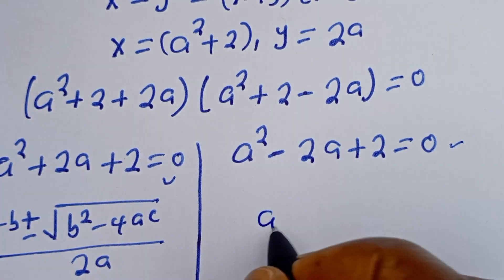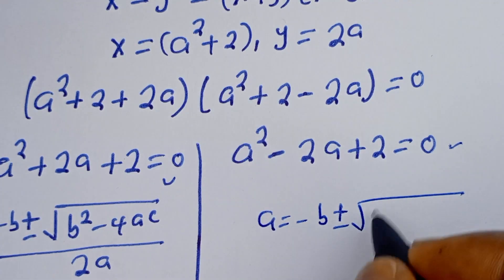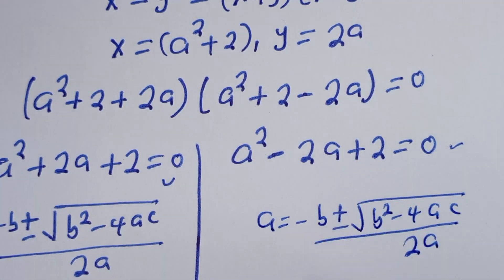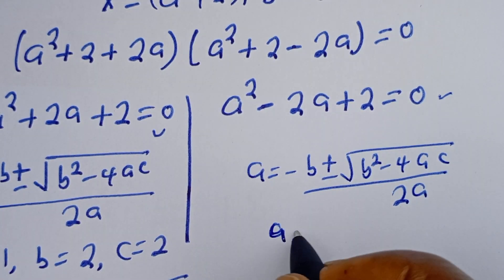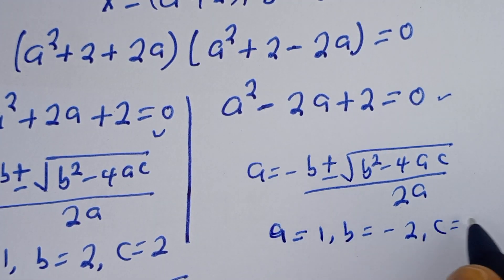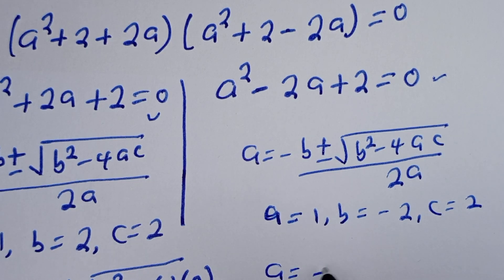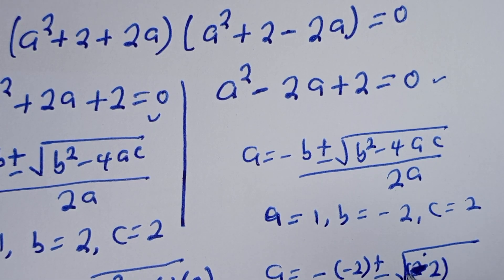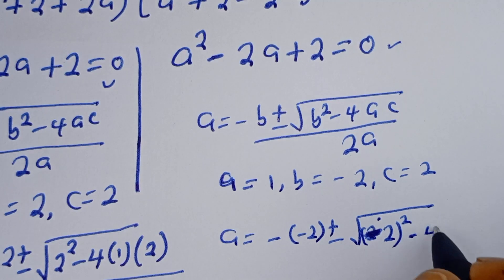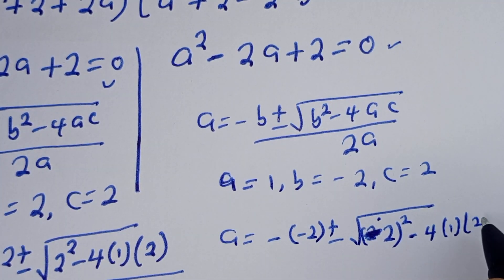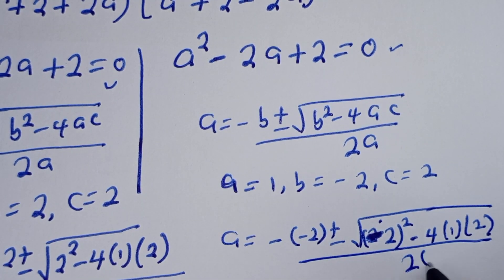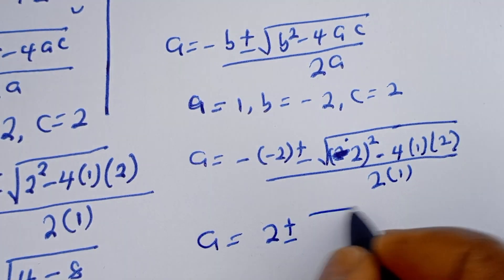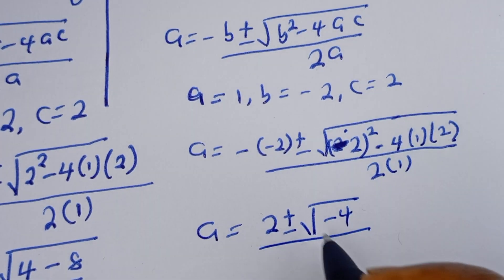Now let's consider the second case using the quadratic general formula. From this equation, a equals 1, b equals minus 2, c equals 2. Then a is equal to minus bracket minus 2, plus or minus square root of minus 2 squared minus 4 times 1 times 2, over 2. This gives a equal to 2 plus or minus square root of minus 4, over 2.